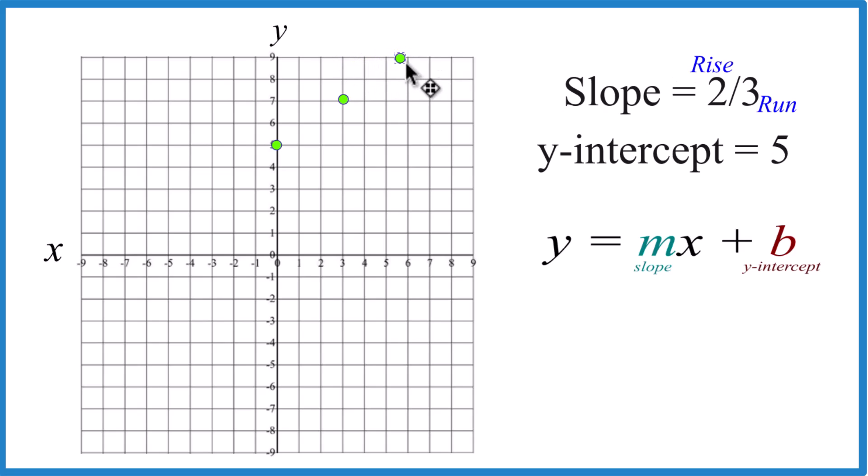But I don't like having this up here, so what I'll do is I'm going to go down one, two, then to the left, so I'm going the opposite direction. Down one, two, to the left one, two, three, and there's the line for when you have that slope of two-thirds and the y-intercept of five.